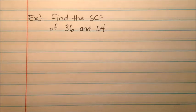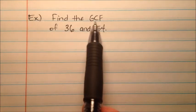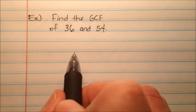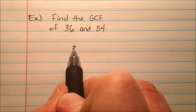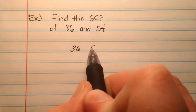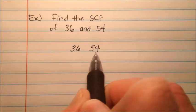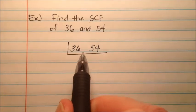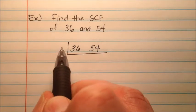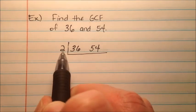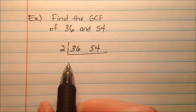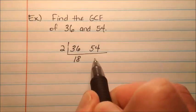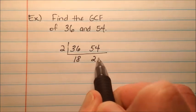In the next example, we're going to find the GCF, or greatest common factor, of 36 and 54. So 36 and 54 go side by side. I put my bar here and notice that they're both even, so I can pull a 2 out. 36 divided by 2 is 18, and 54 divided by 2 is 27.